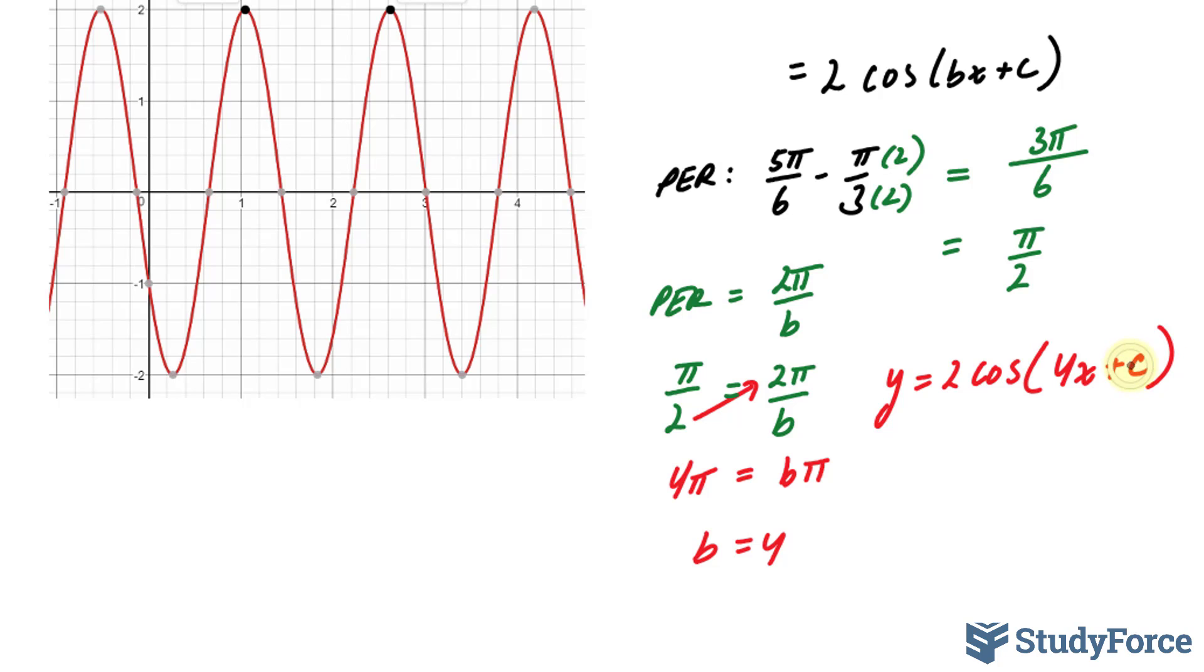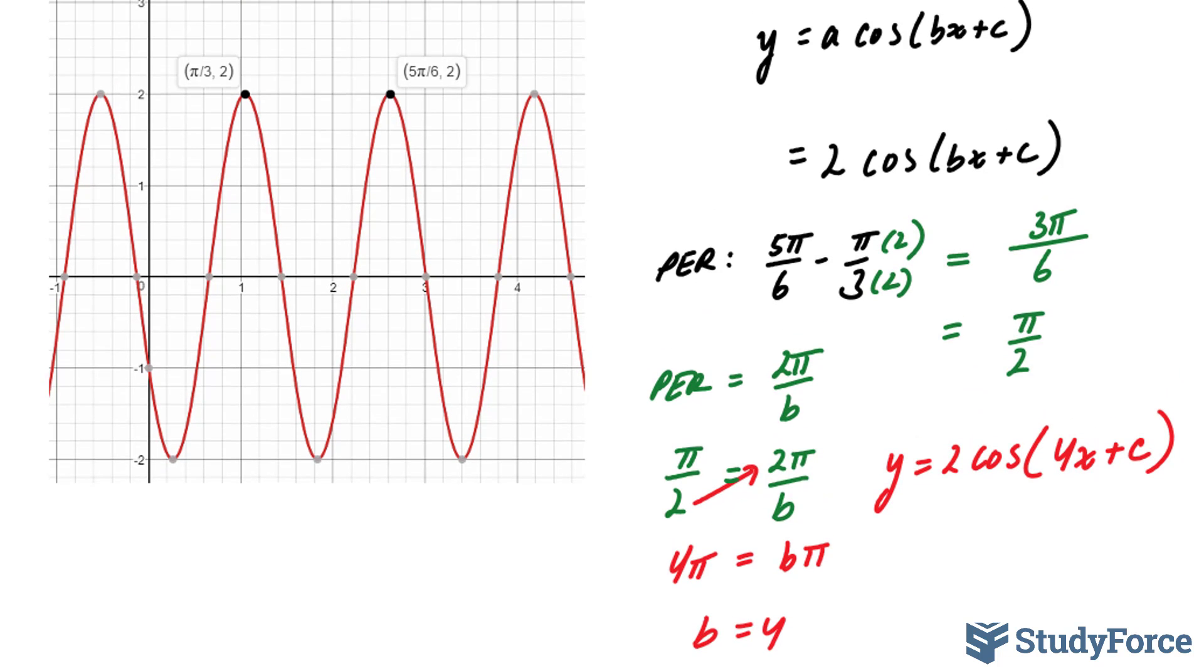My last step is to find c. c relates to the phase shift. The phase shift is how much that wave has moved from the original position. Originally, without a phase shift, the sine curve would look like this. It would start up here, make its way down halfway through the cycle, and then go back up. This means that if it started over here, and now we have a wave that's over here, then it has been pushed this much of a distance to get to that point.